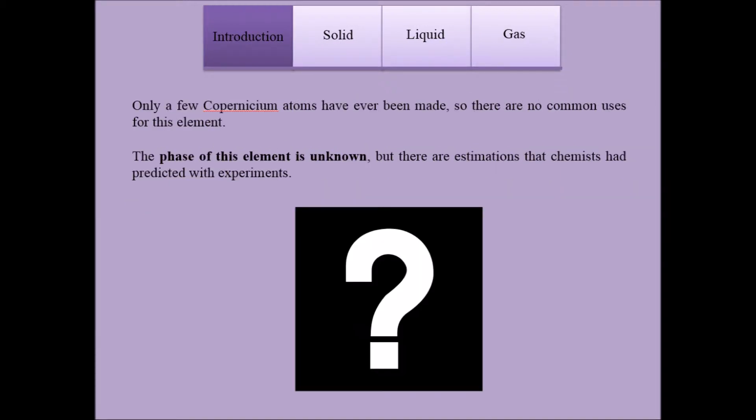Only a few copernicium atoms have ever been made, so there are no common uses for this element. The phase of this element is unknown, but there are estimations that chemists have predicted with experiments.